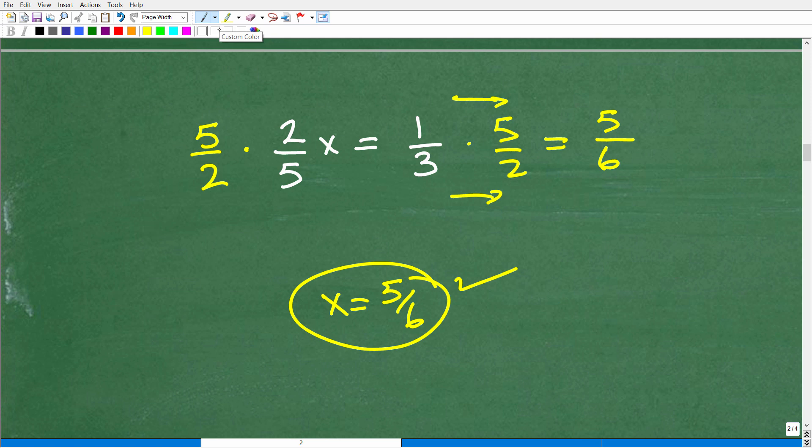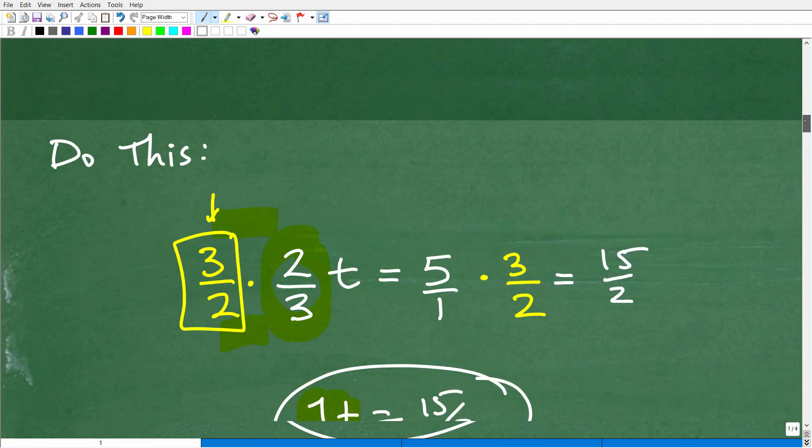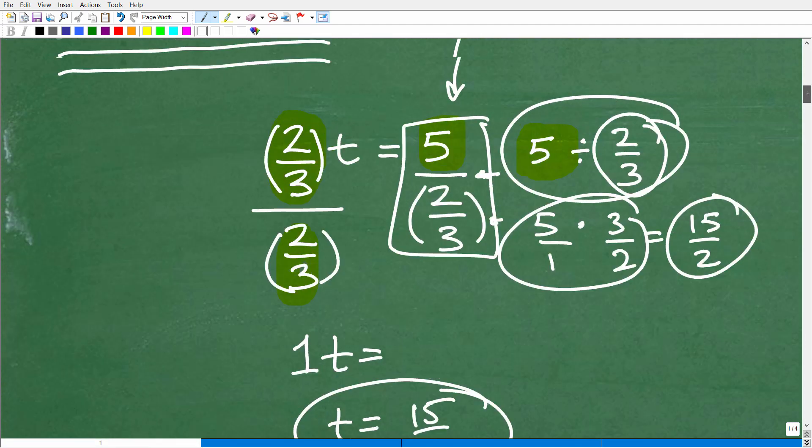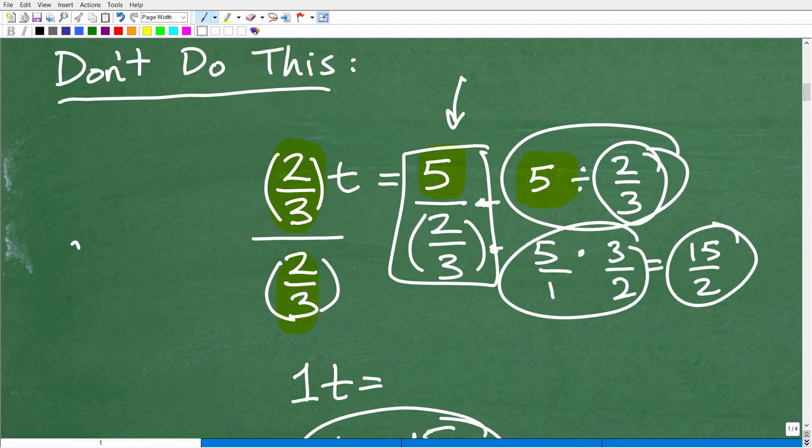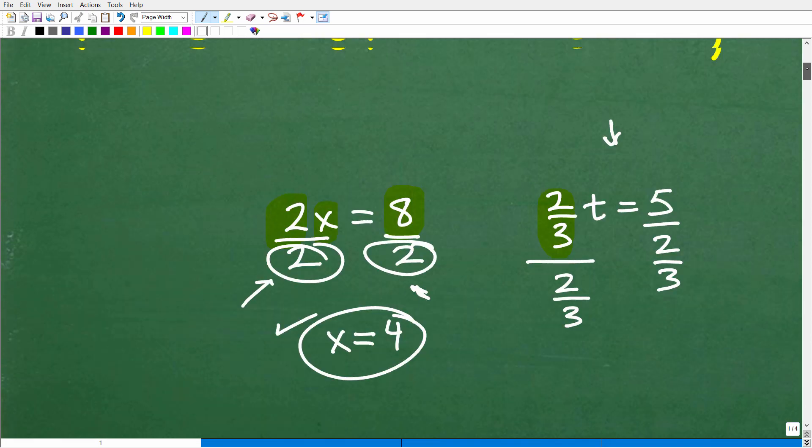So when you're learning one-step equations, anytime fractions are involved in an equation, this is a typical hotspot where students end up getting confused. And it's understandable. Okay? Because if you're dealing with complex fractions, you know, there's a reason why they're called complex fractions because they're a little bit more complex. So, we don't want to make the problem any more complex than it necessarily needs to be.